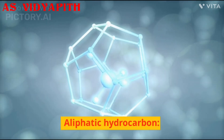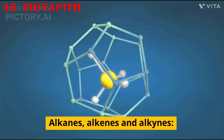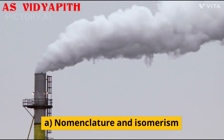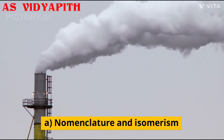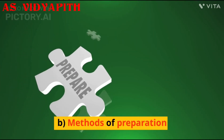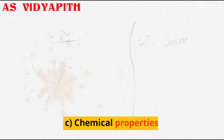Chapter 13: Hydrocarbons. Important Topics: 1. Aliphatic Hydrocarbons — Alkanes, Alkenes and Alkynes. a. Nomenclature and Isomerism. b. Methods of Preparation.